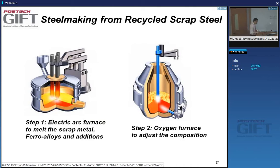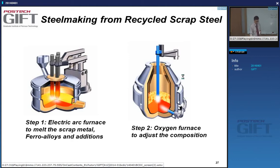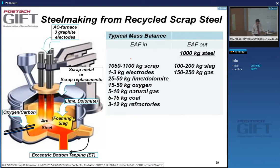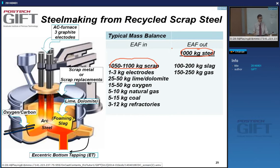Picking up with the electric arc furnace: here in the steel plant we also have a steelmaking unit — the electric arc furnace — and then secondary metallurgy. The typical mass balance of an electric arc furnace: you introduce about a tonne of scrap and you get about a tonne of steel out. It's basically a scrap-based route.